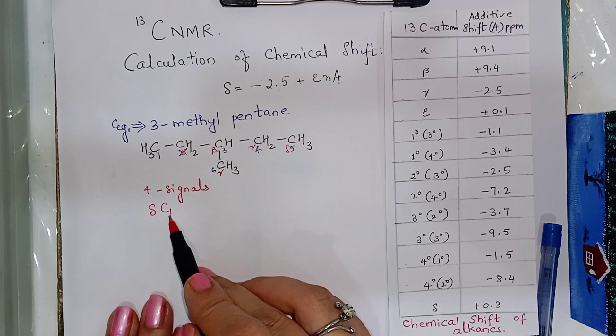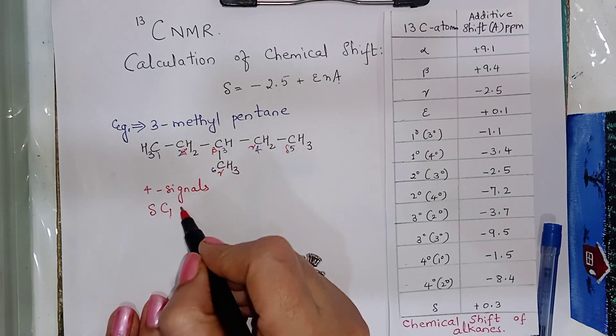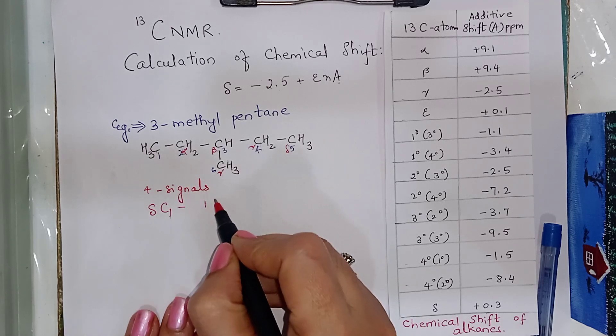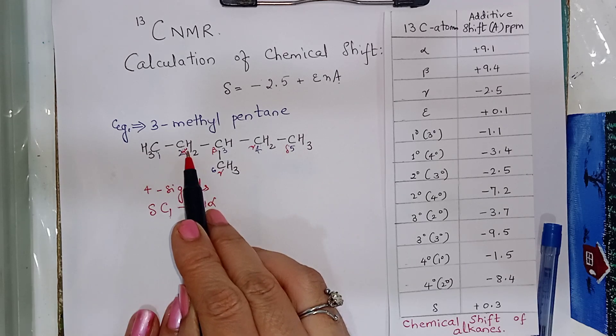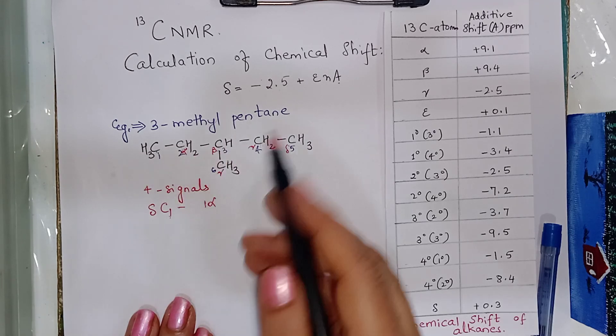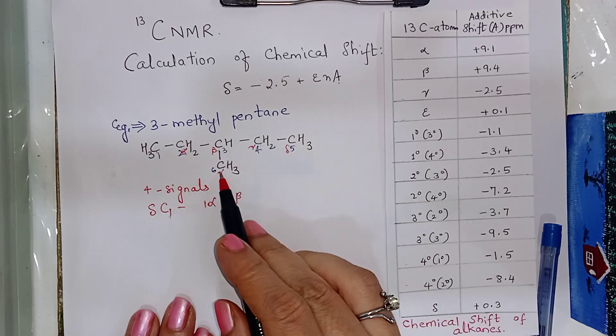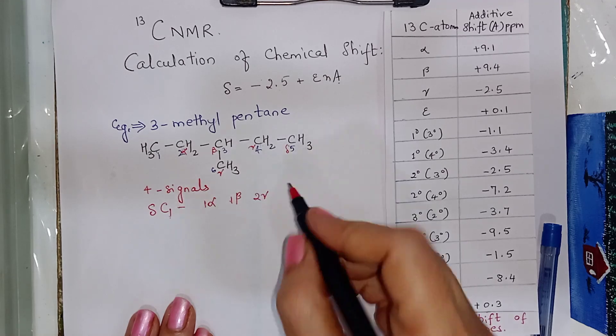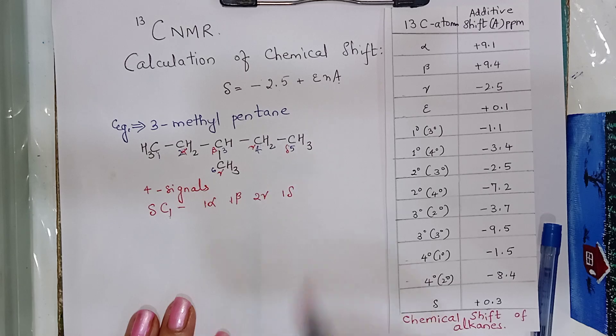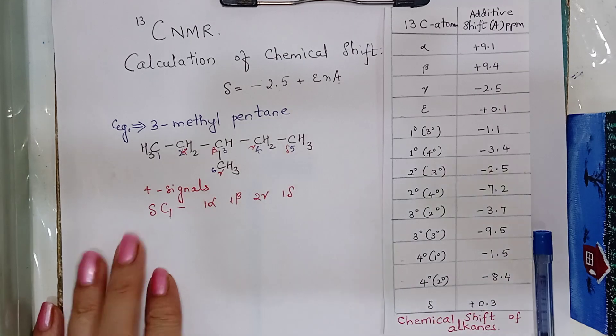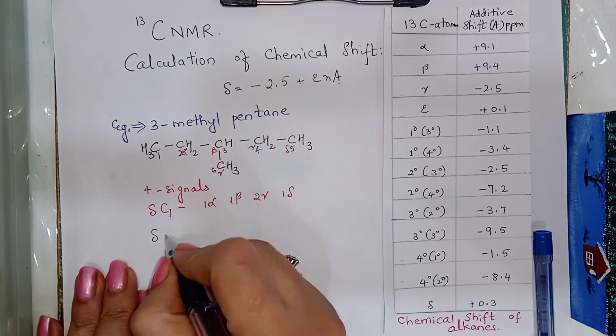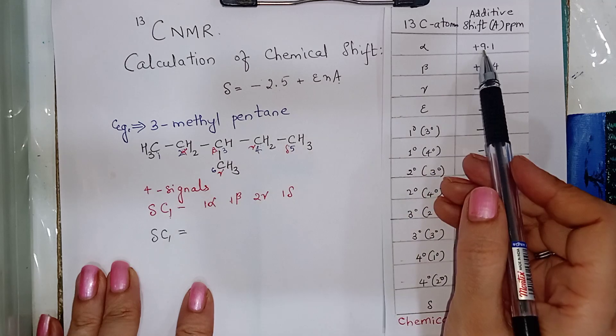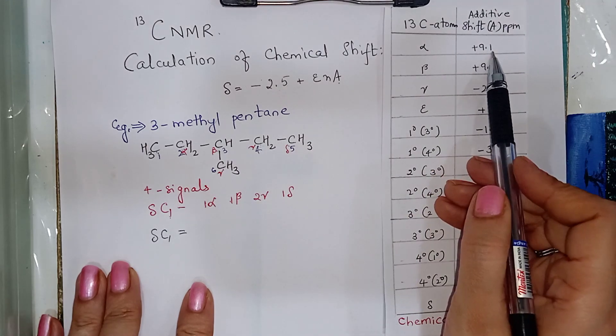So, chemical shift for carbon 1 will be 1 alpha carbon, 1 alpha carbon, 1 beta carbon, 2 gamma carbon and 1 delta carbon.